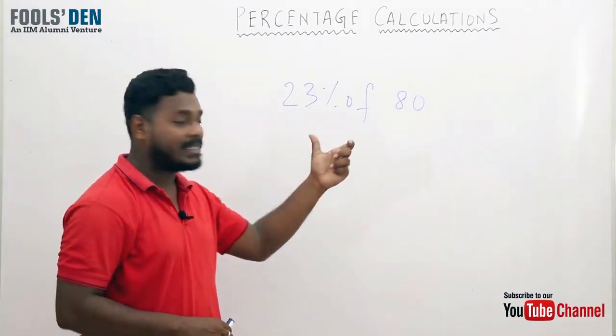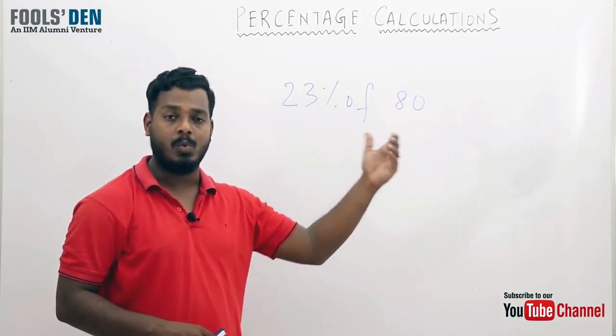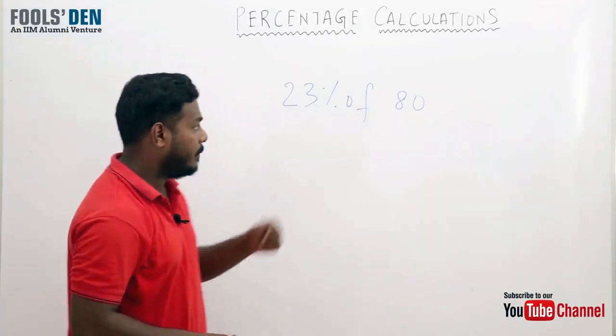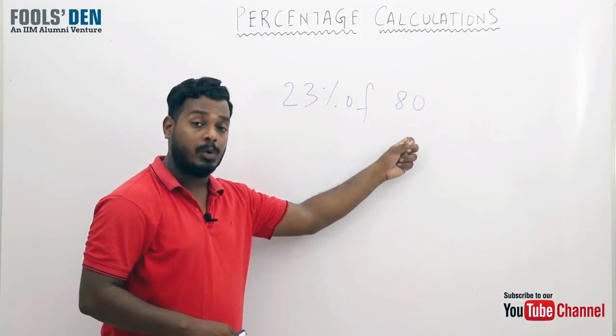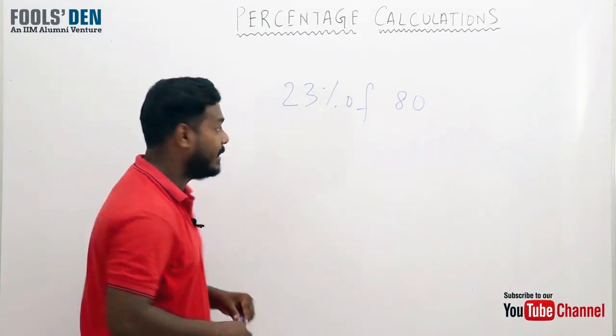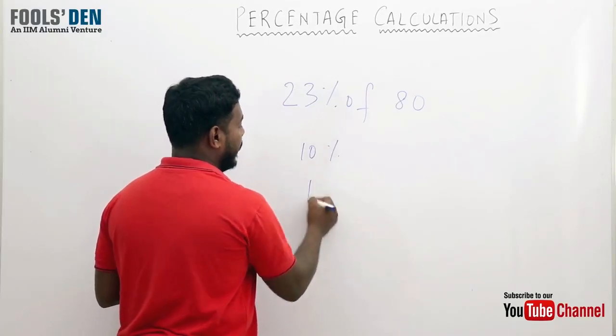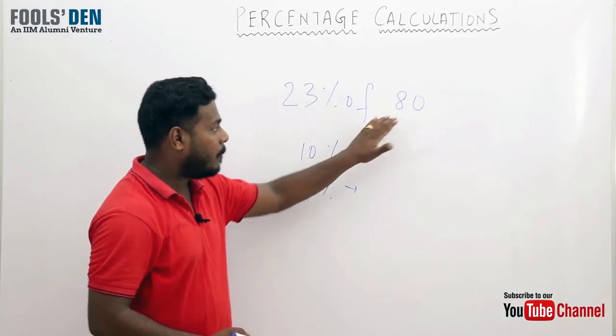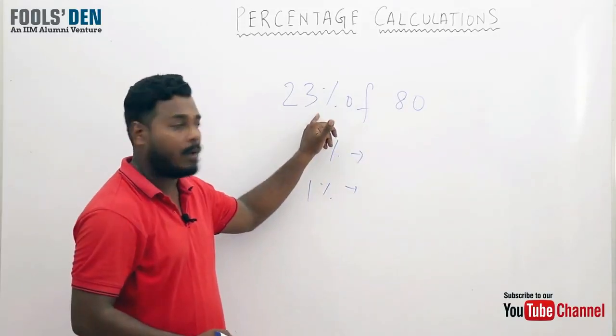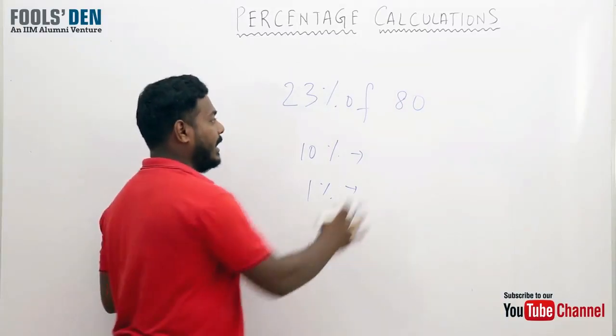Let's see how to calculate complicated percentages fast without using a pen within 5 seconds. But first let's get some basic questions correct. We'll learn the concept there and then apply these concepts to complicated numbers. Suppose you need to calculate 23 percent of 80 without using a pen. How would you do it? All you need to do is calculate 10 percent and 1 percent of the given number.